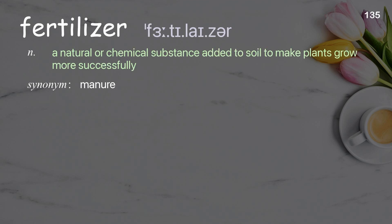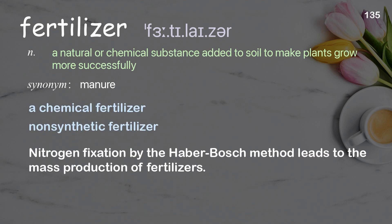Fertilizer: a natural or chemical substance added to soil to make plants grow more successfully. Examples: a chemical fertilizer, non-synthetic fertilizer. Nitrogen fixation by the Haber-Bosch method leads to the mass production of fertilizers.